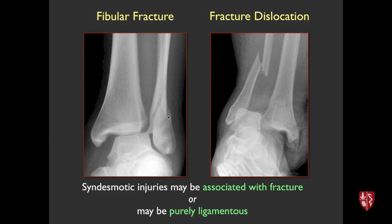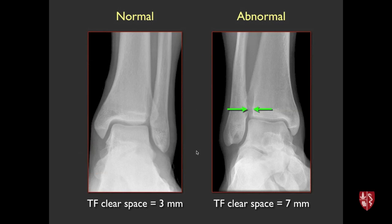These are obviously not normal examples. Injuries of the ligaments can be associated with fracture or may be purely ligamentous. Here there's clearly widening of the medial ankle mortise with widening of the tibiofibular space and an oblique fibular fracture, and this one is a fracture dislocation — clearly markedly widened. The more subtle cases are the challenge. Here's normal, and then here's one where the space is about seven millimeters — borderline abnormal. If the patient has tenderness there, do they really have an injury to that syndesmosis?